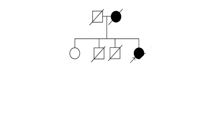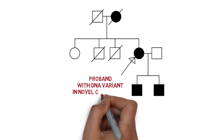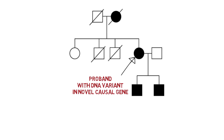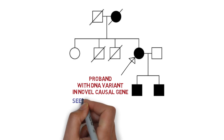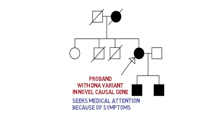In genetic studies that identify a novel causative gene, usually a severely affected proband and his or her relatives are described in the initial report of the gene's role in disease. The initial report of the gene would then potentially underestimate survival, because the patients who seek medical attention in specialty genetic cardiology clinics tend to have more severe disease and thus are at higher risk for mortality.